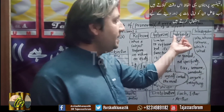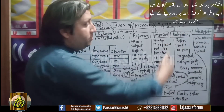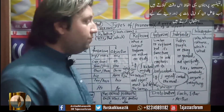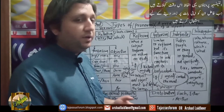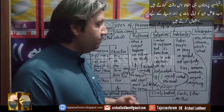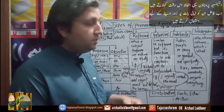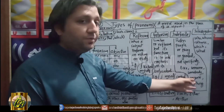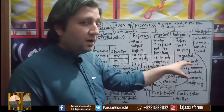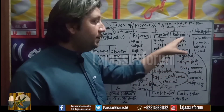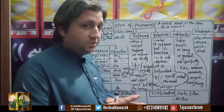Now coming to the next type of pronoun, that is indefinite pronoun. An indefinite pronoun is a word that refers to people or things in general, not specifically. For example: somebody, someone, everybody, anyone, nobody. These kinds of pronouns are called indefinite pronouns, in which no specific person or thing has been pointed out.